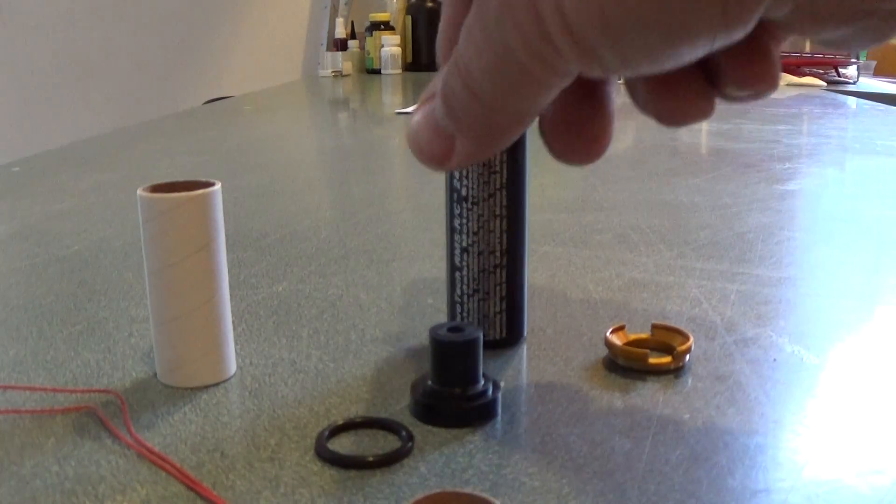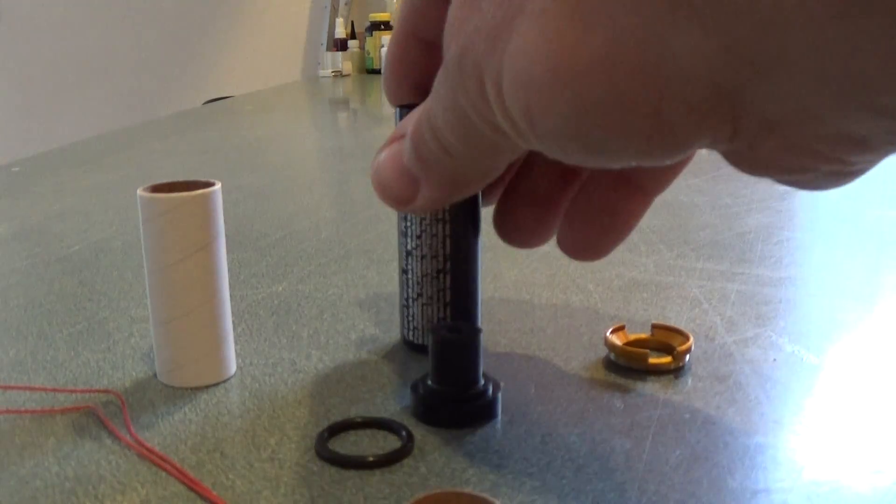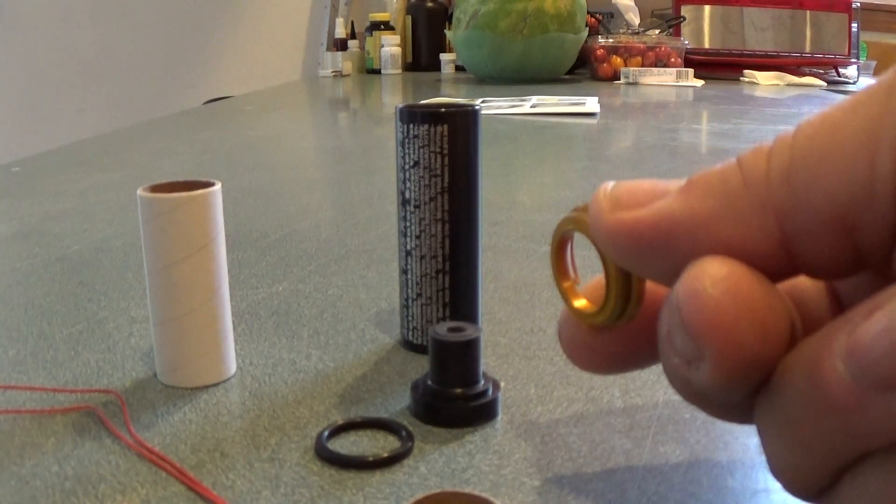You've got the reload casing, which has a solid end. There's no forward end on it. And the rear closure ring.